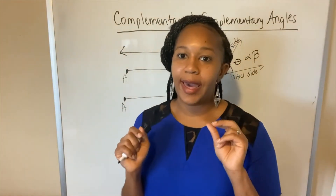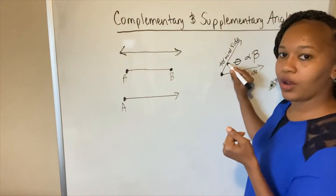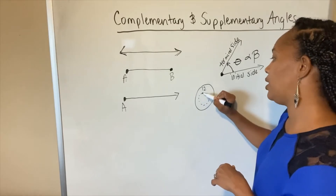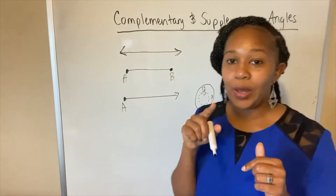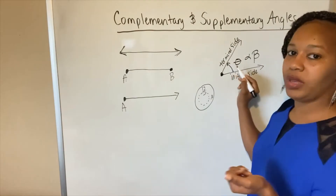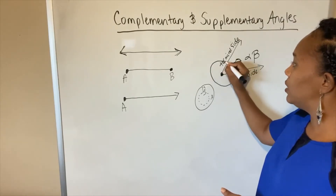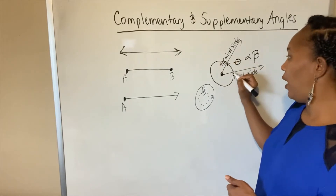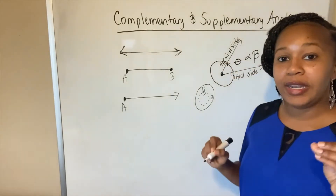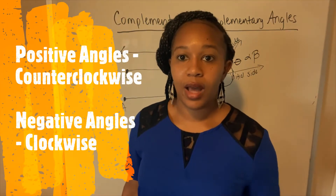Two important things to know: positive angles go in a counterclockwise direction. Clockwise is the direction clock hands rotate, and a clockwise angle is a negative angle. A counterclockwise angle is a positive angle. So if an angle is going counterclockwise, it's positive. If it starts here but goes around to the other side in a clockwise direction, that will be a negative angle. Remember: positive angles go counterclockwise and negative angles go clockwise.